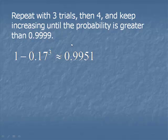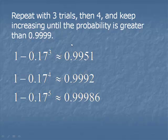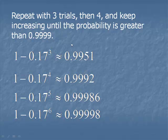For three components, one minus 0.17 cubed is not large enough. Repeat it again with four, five, and finally it works with six components, giving us a probability higher than 0.9999.